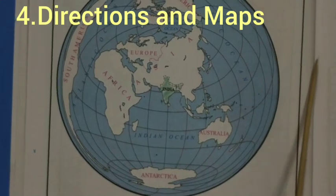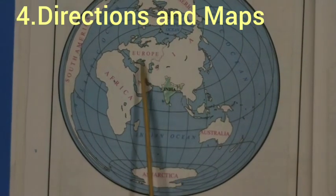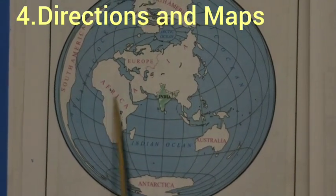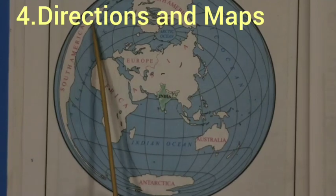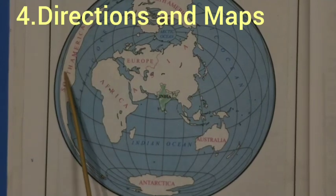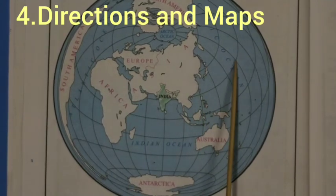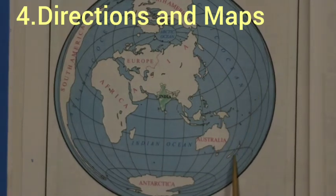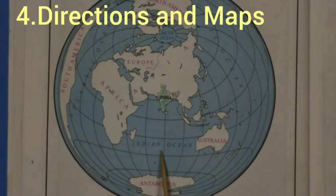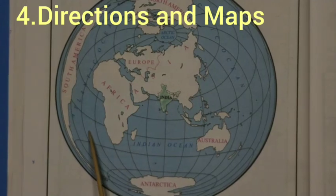On Earth there is a vast amount of land. This is the map of the world. The vast land areas are shown in white color, and the water bodies — the oceans — are shown in blue color.